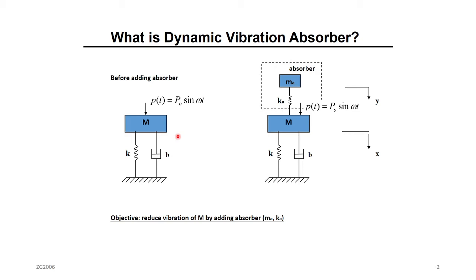This is like a single degree of freedom underdamped mechanical system. My objective is to reduce the vibration of the large mass M. If x is the amplitude of M, I want to make x equal to zero. Is it possible? The answer is yes — by adding a small mass and small spring attached to the large system, which we call the absorber.